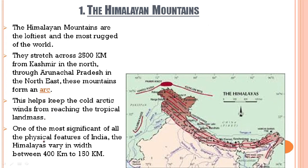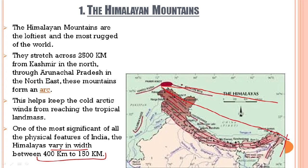Next, one of the most significant of all the physical features of India — the Himalayas — they vary in width between 400 kilometers to 150 kilometers. The length runs from Jammu and Kashmir and Ladakh, through Himachal, through Uttarakhand, north of Uttar Pradesh — that is Nepal — north of Bihar, Bengal, Sikkim, and Arunachal Pradesh. Across all these regions you can easily find that the width of this mountain range greatly varies, ranging between 400 kilometers to 150 kilometers.